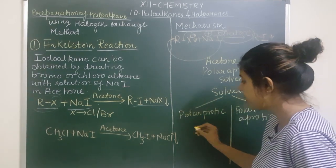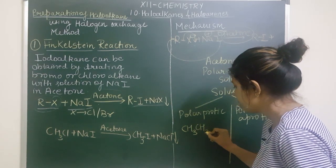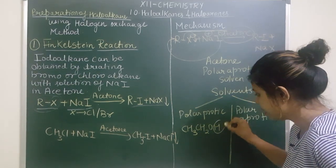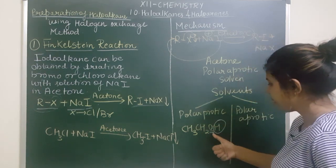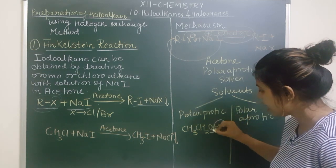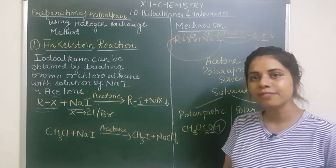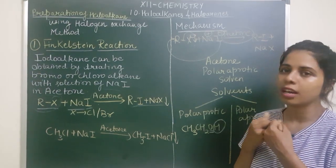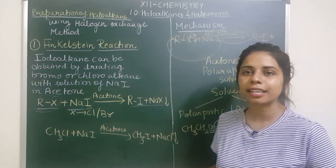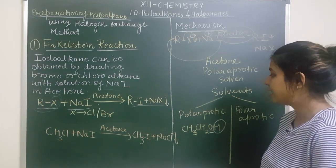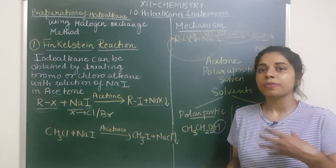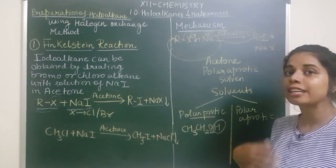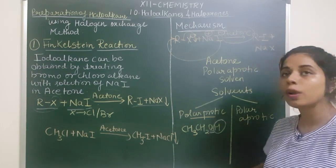Polar protic solvents are those where hydrogen is directly linked to an electronegative element. For example, in ethanol, hydrogen is directly linked to oxygen — which is electronegative. Oxygen snatches the electrons of hydrogen, and hydrogen readily releases H⁺ into solution — generating a proton. That is why we call these polar protic solvents: they can readily give H⁺ in solution when linked to an electronegative element.